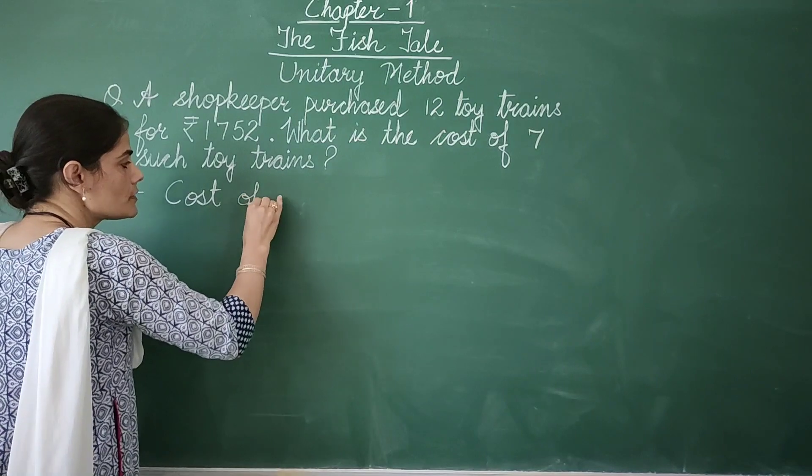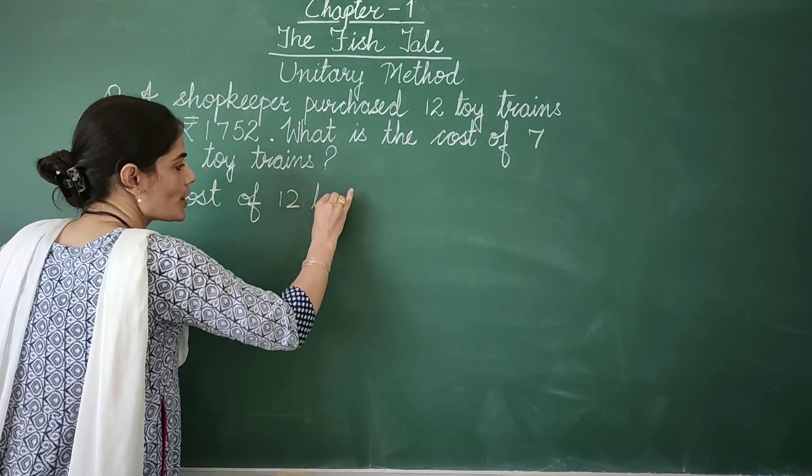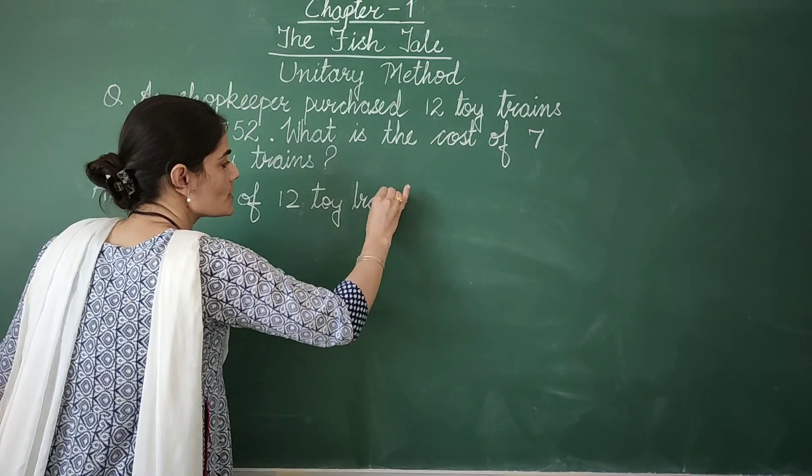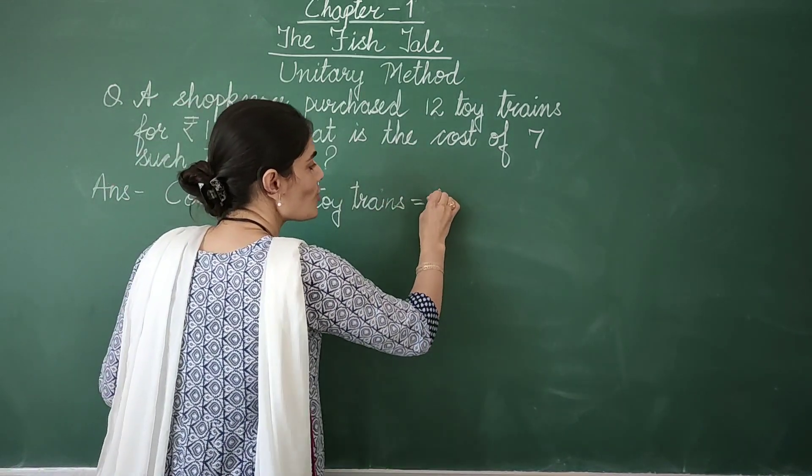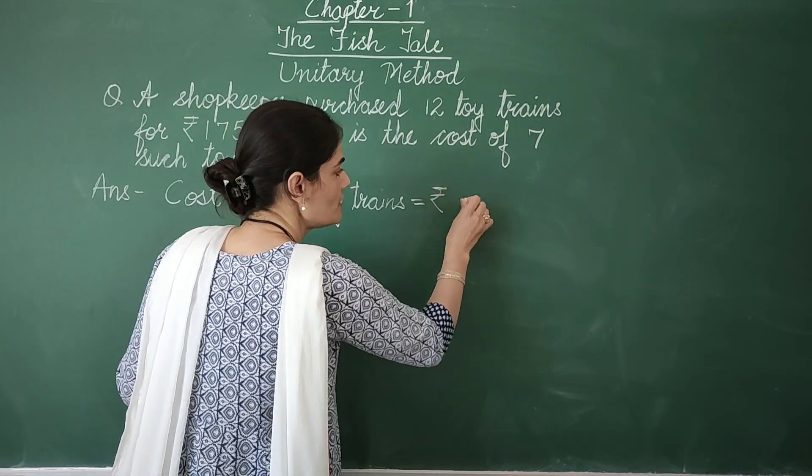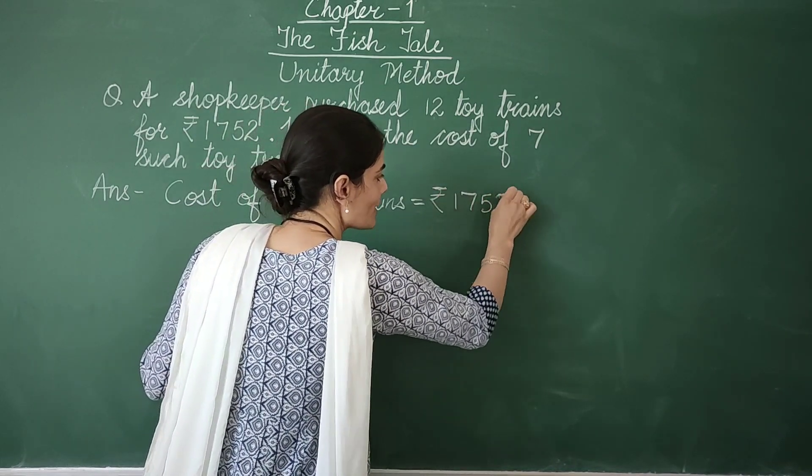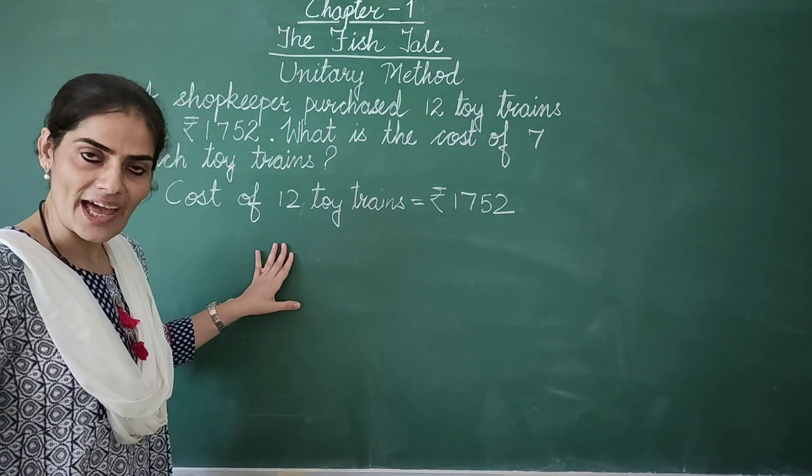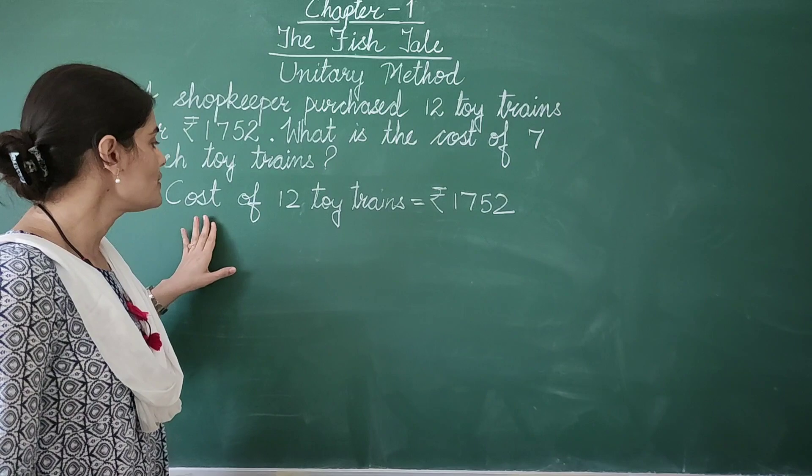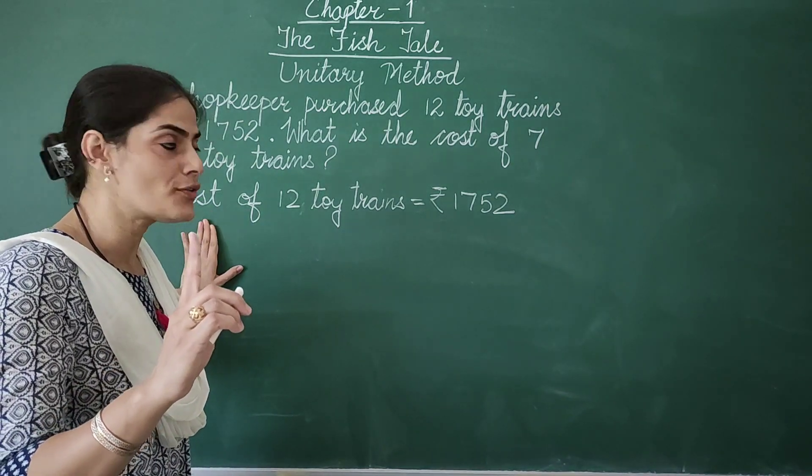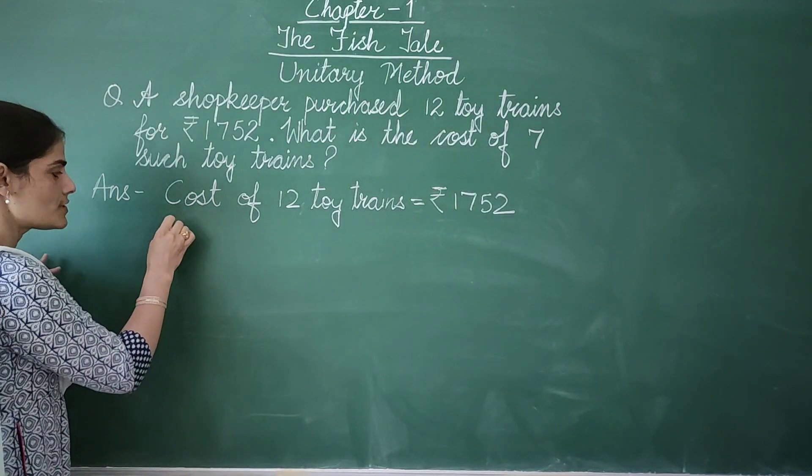So I will write like this, cost of 12 toy trains. Now just observe everyone, this cost has come towards the right side of equal to mark. Like this. Now with the information that I have, as I told you, we will first find the cost of 1 unit or we can say 1 toy train.